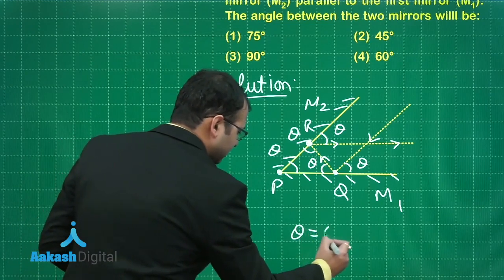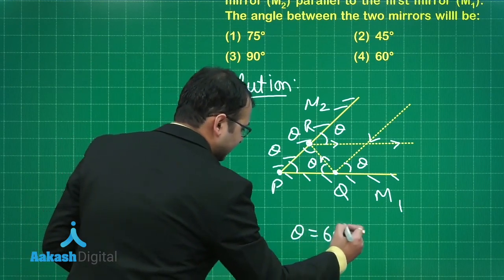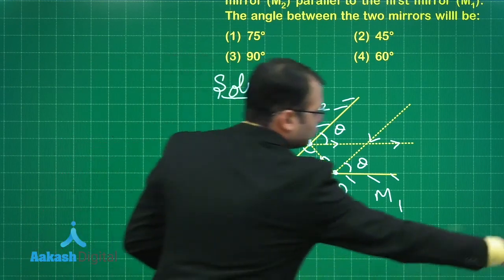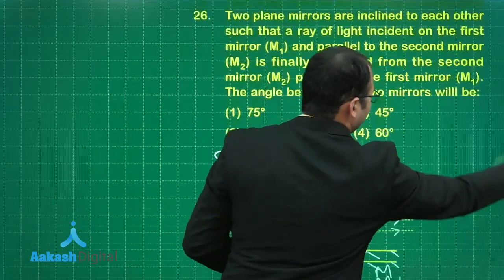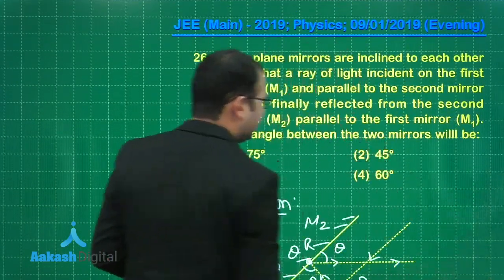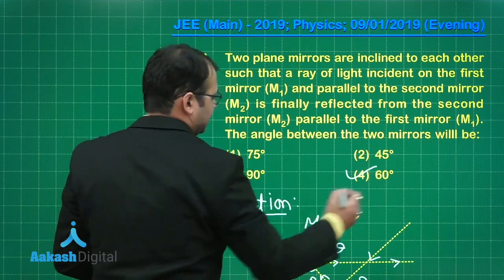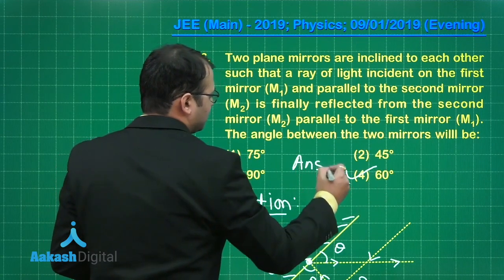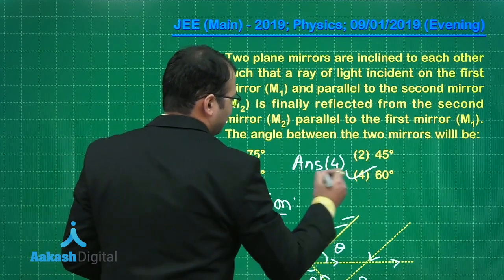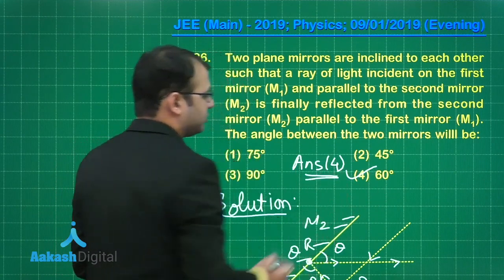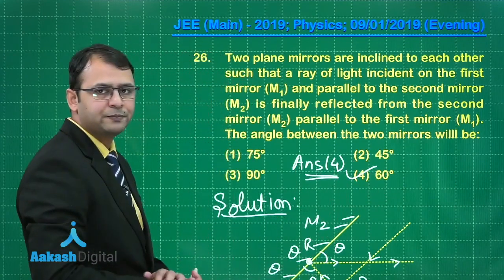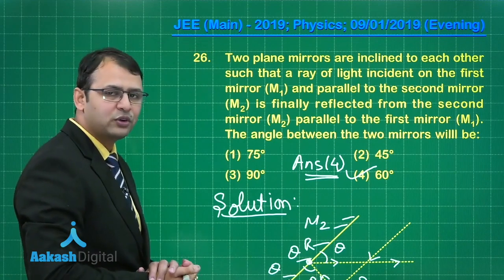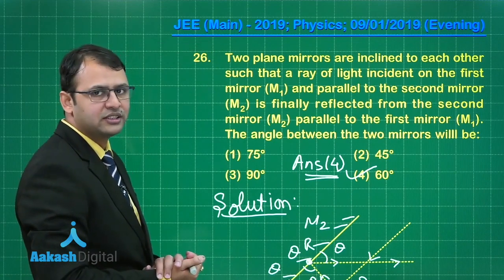Since triangle PQR is equilateral, theta equals 60 degrees. The angle between the mirrors is 60 degrees, and the answer to question 26 is option 4.